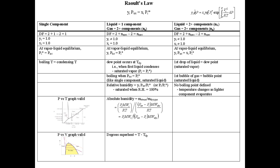Let's review Raoult's Law. It is a simplified form of a full vapor-liquid equilibrium (VLE) expression. The full VLE includes a Poynting correction and activity coefficients for non-ideal cases — extra terms we'll calculate later. For now, we set those values equal to one and use the simplified Raoult's Law.